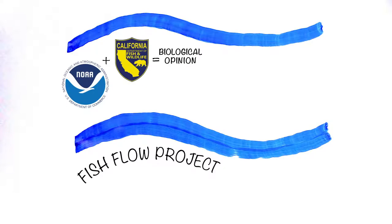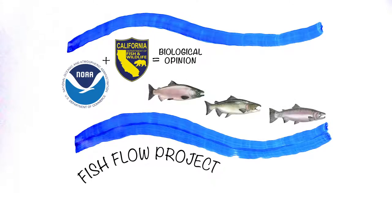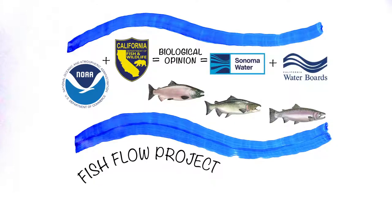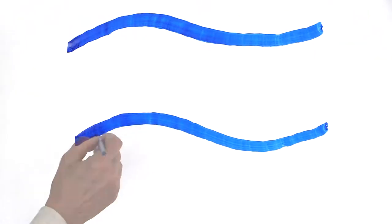In the Russian River Biological Opinion, a 15-year blueprint to improve fish habitat and ensure water supply, one of the requirements requires Sonoma Water to ask the State Water Resources Control Board to reduce the minimum in-stream flow requirements.